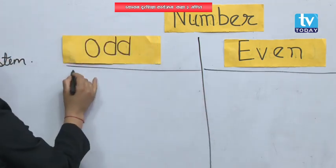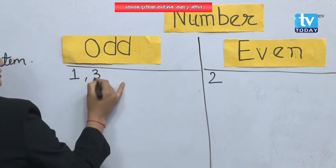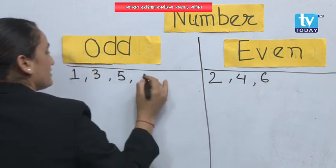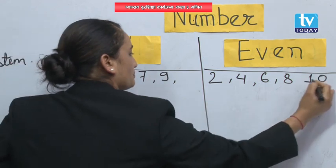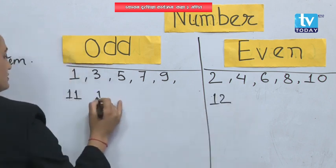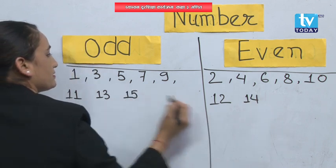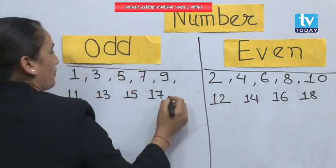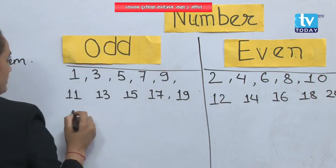Odd number: it's 1. Even number means having a pair — that means 2. So: 3, 4, 5, 6, 7, 8, 9, 10. Then 11, 12, 13, 14, 15, 16, 17, 18, 19, and up to 20.